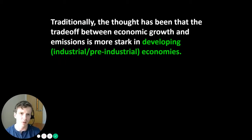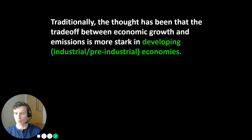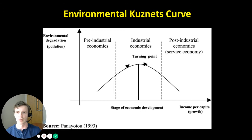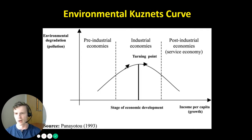Traditionally, the thought has been that the trade-off between economic growth and emissions is more stark in developing or pre-industrial economies. This has to do with the environmental Kuznets curve. On the x-axis, we have stage of economic development or income per capita. On the y-axis, some measure of environmental degradation or pollution, which we substitute here for CO2 emissions.